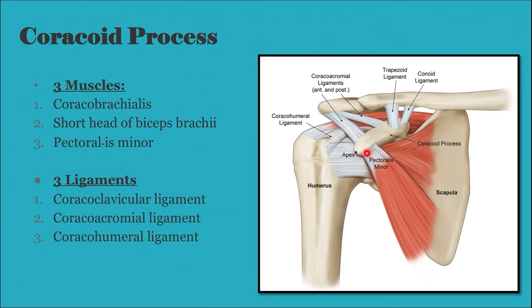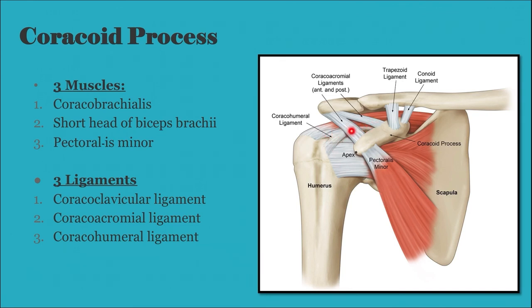The three ligaments of the coracoid process are: the coracoclavicular ligament, comprising the conoid and trapezoid parts attaching on the conoid tubercle and trapezoid ridge of the clavicle; the coracoacromial ligament, which usually has posterior and anterior bands; and the coracohumeral ligament, which arises from the root of the coracoid process.